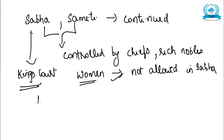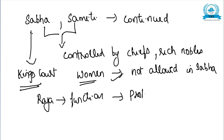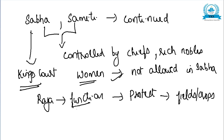The Raja's function was now to protect the fields and crops of the agriculturist rather than cattle wealth. Before, cattle wealth was more important, but here the Raja's function shifted to protecting the fields and crops of the agriculturist rather than cattle wealth. These were some of the key changes in the political structure during the Later Vedic Period.